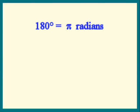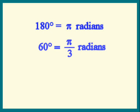Divide each side by 3. Divide each side by 2. We get 30 degrees is pi over 6 radians.